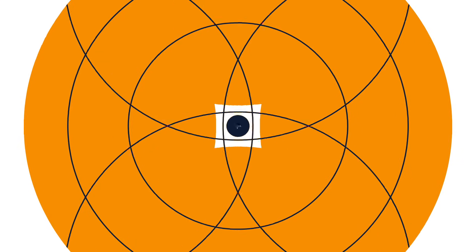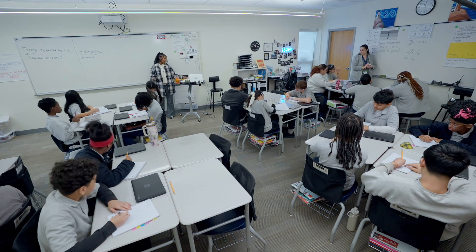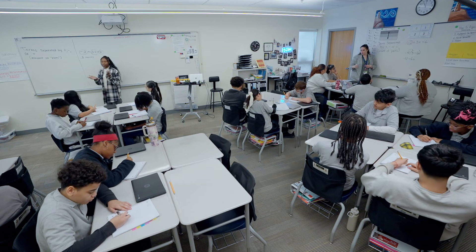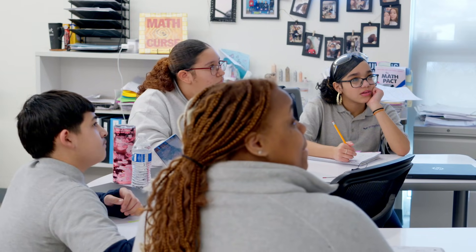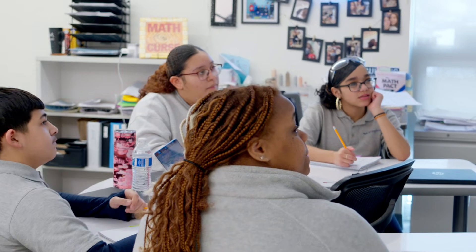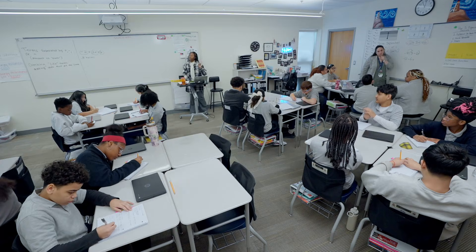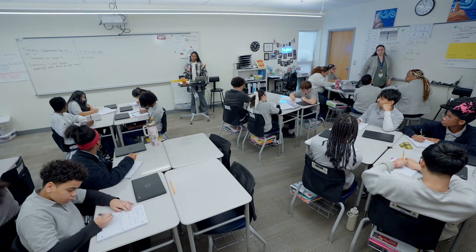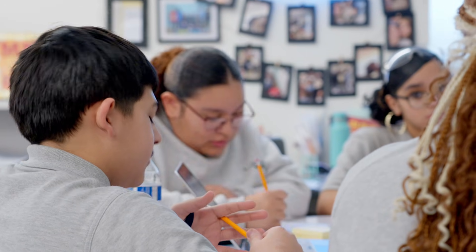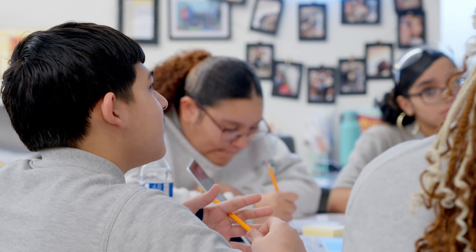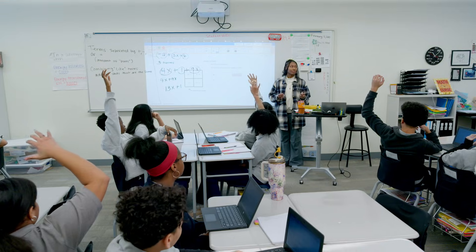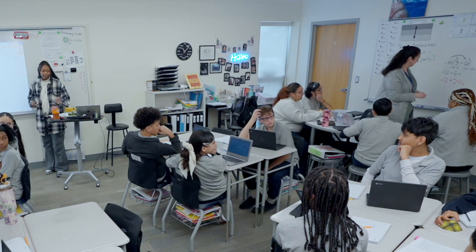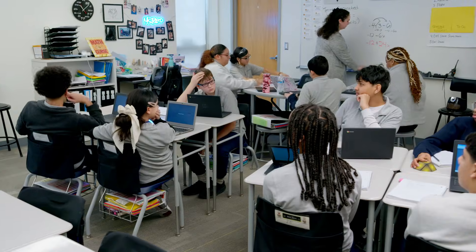Today we're going to be talking about combining like terms, meaning we're adding units that are the same. You're heading over to today's Desmos and you're going to click two squares and try to combine the terms. What if I give you something that is factored? Let's use our critical thinking skills — you should expand it first.